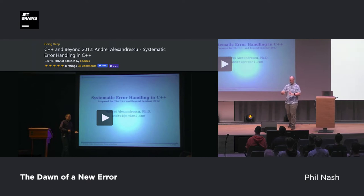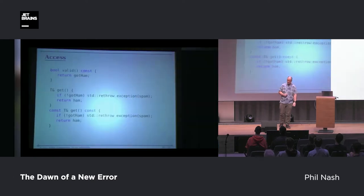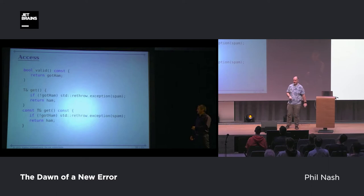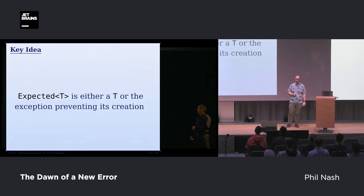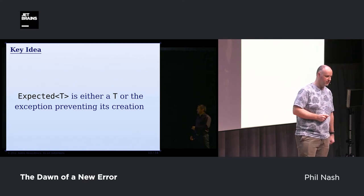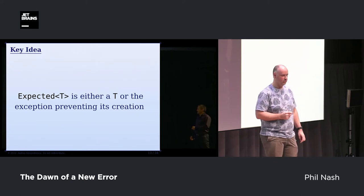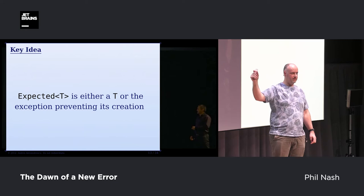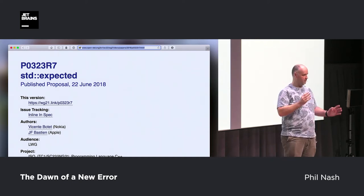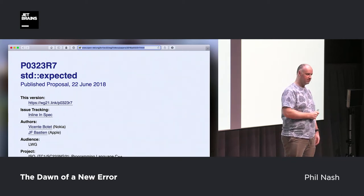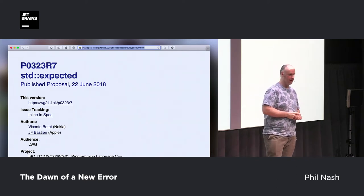In 2012, Alexandrescu came out with another talk: "Systematic Error Handling in C++." He presented a variation on the same type — some of the same ideas, but no longer with the throwing destructor. It still throws on access if it doesn't contain the actual type, but he'd now honed in on the key idea: it's either a T — the thing you wanted — or the exception preventing its creation. That was really the essence of it all along. The name he gave this one: Expected. That sounds familiar because there is a proposal for std::expected, which is based on boost::expected, which in turn was based on Alexandrescu's expected.